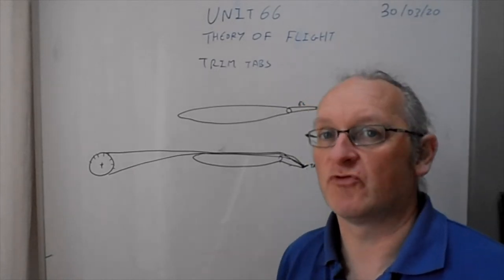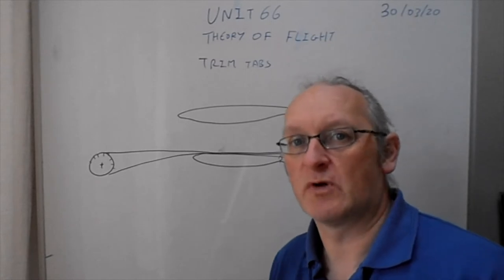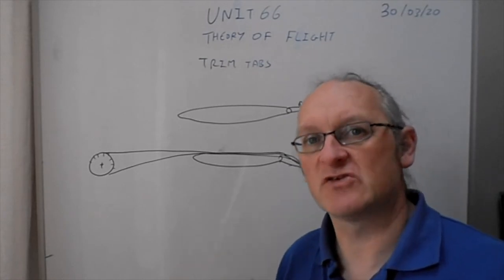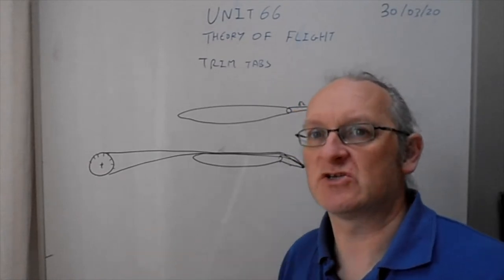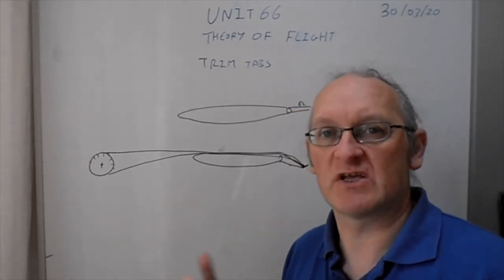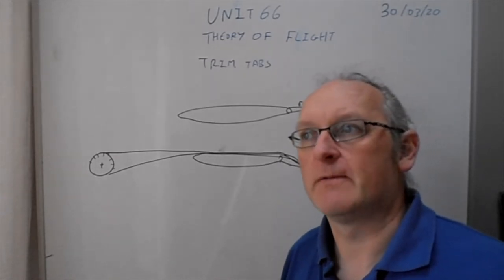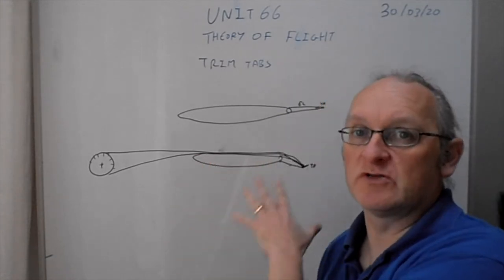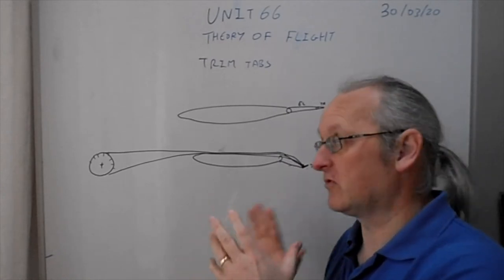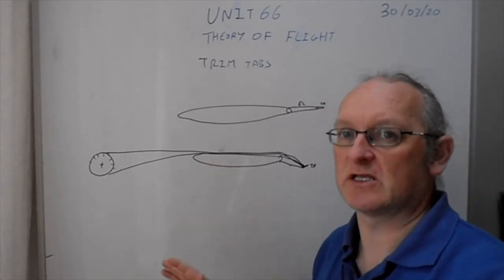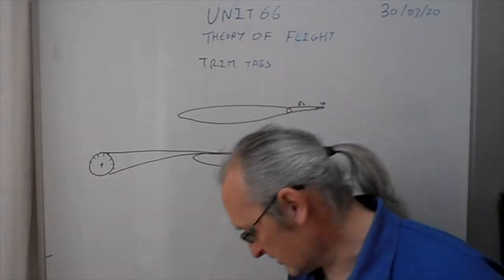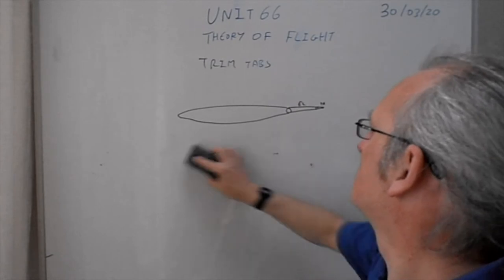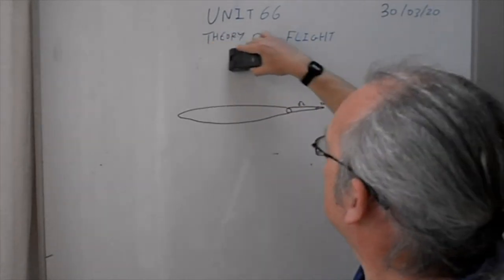The reason I've emphasised that trim tabs are manually operated is that balance tabs are a little different — they are automatically operated. Now I'm going to talk about balance tabs. That's the basic description of trim tabs — they can be found on ailerons, elevators, and other surfaces. There's also advanced trim using stabilators, like on 737s and large airliners, but for this level, I want you to focus on the basic operation of a trim tab.